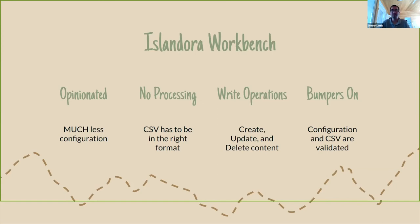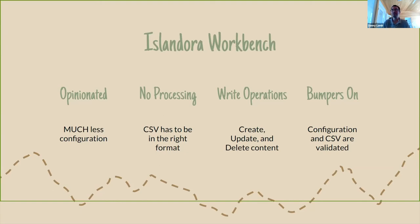There is no processing in Workbench — it does not transform the data. You have to have the data in the right format, and it does expect a particular format because it is opinionated. It can do any write operations — create, update, or delete content. It's a little bit better than the Migrate API in the sense that Migrate can only update stuff if you ingested it using Migrate first. Workbench can deal with that — as long as you know the ID, you can write a single line CSV and it'll go. In general, this has the bumpers on — it checks everything before you run it.